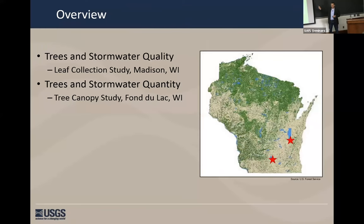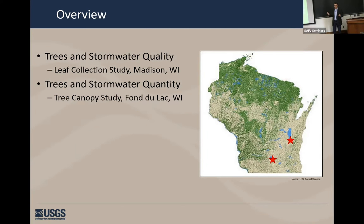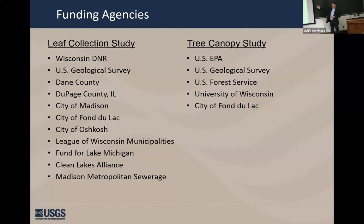I'm going to really focus on two current ongoing research projects that the USGS and others are working on. Both of them are in Wisconsin — one is in Madison, and that will be the stormwater quality leaf collection study. It started in Madison, but now we've expanded out into Fond du Lac and Oshkosh, Wisconsin. But it really represents all of the northern tier where leaves are part of the stormwater picture. The second research project, which we just started a year ago, is a stormwater quantity project located in Fond du Lac. I want to acknowledge all of the players who have contributed either in kind or financially to each of these projects — a pretty decent list of local, state, federal agencies, and some NGOs and watershed groups as well.